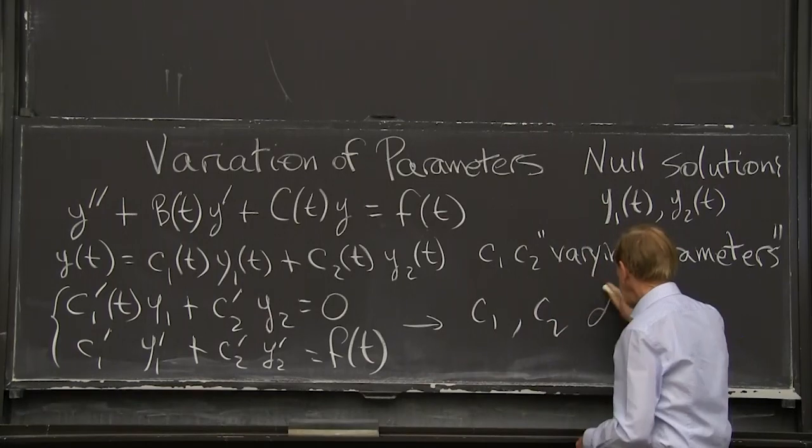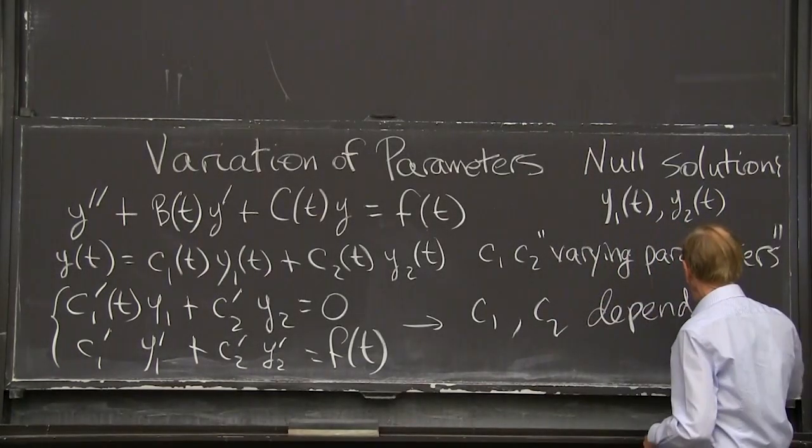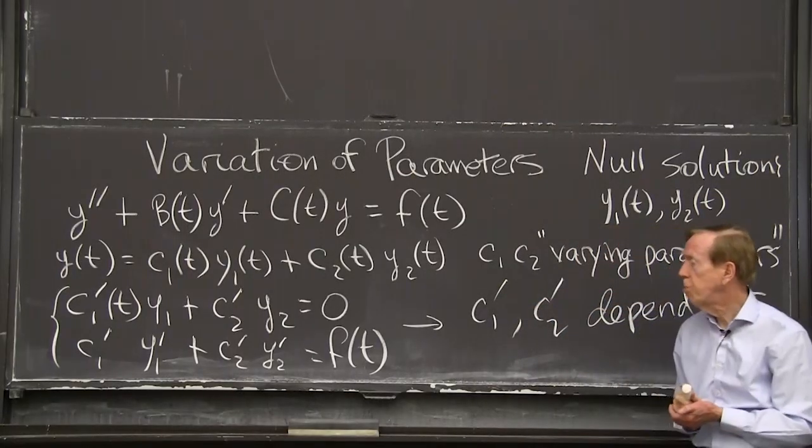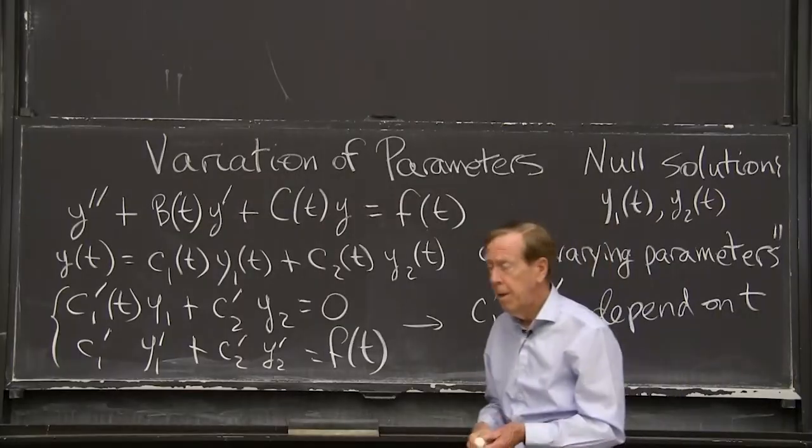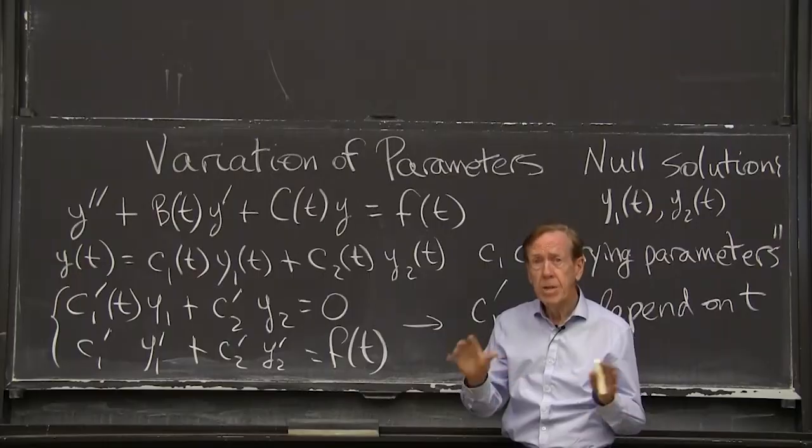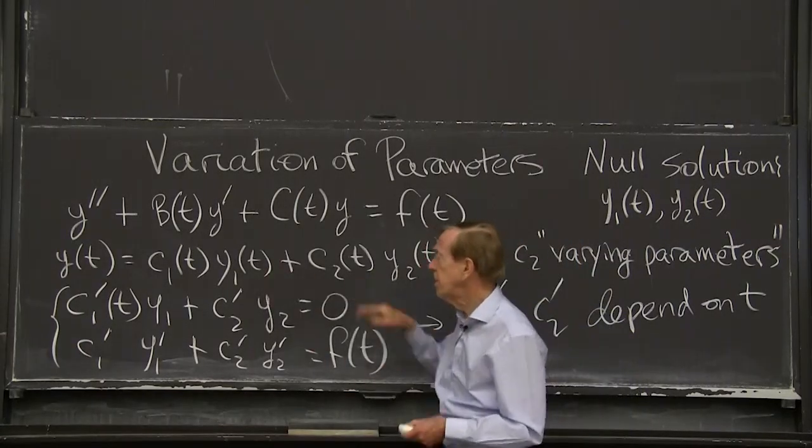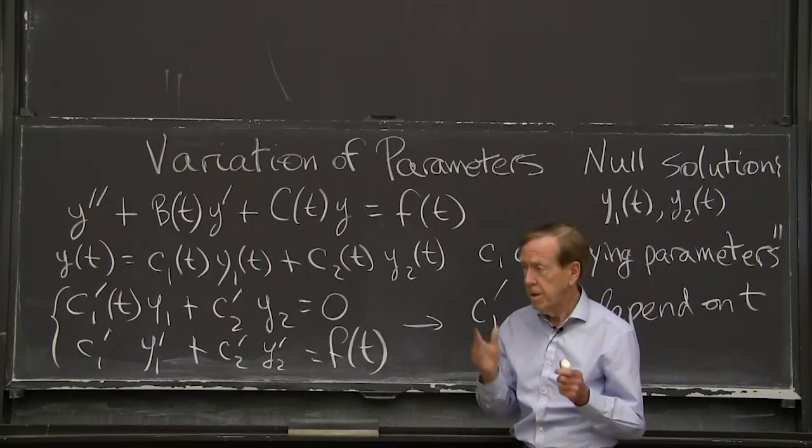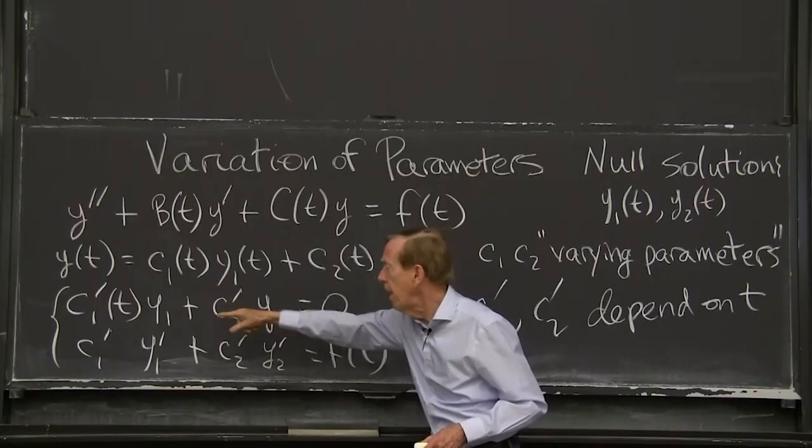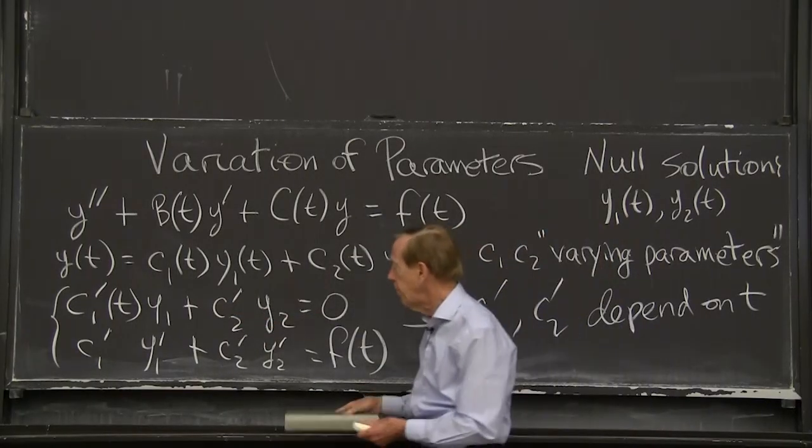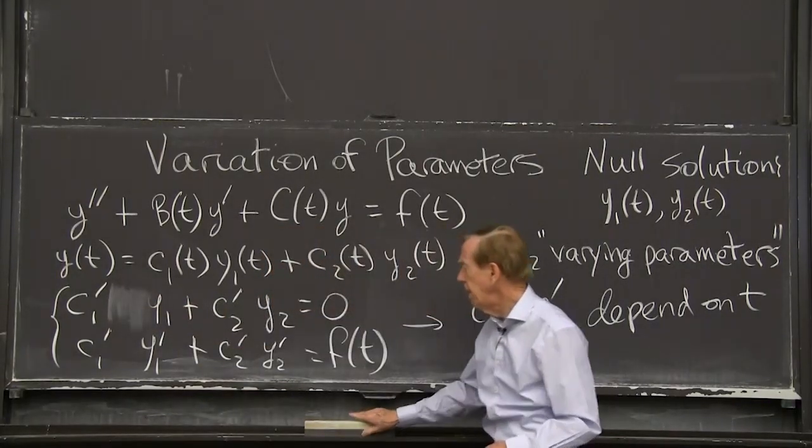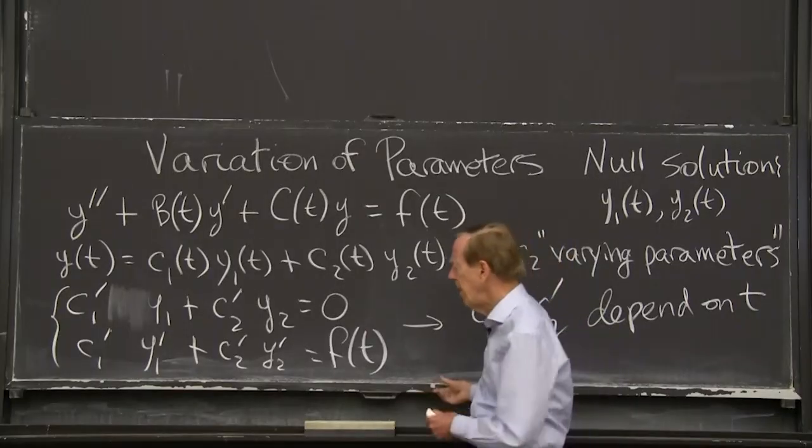They have straight lines in the c1, c2 plane. They intersect. We know how to solve the most basic problem of linear algebra. Solve two equations in two unknowns. And we do that for each t. And we get an answer. So this leads us to c1 and c2.